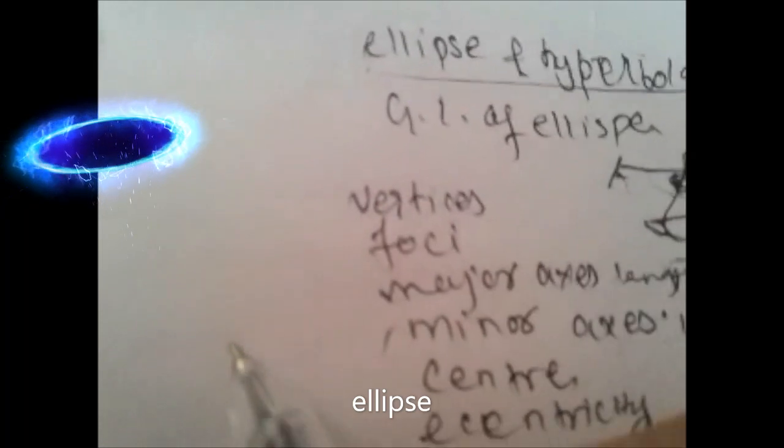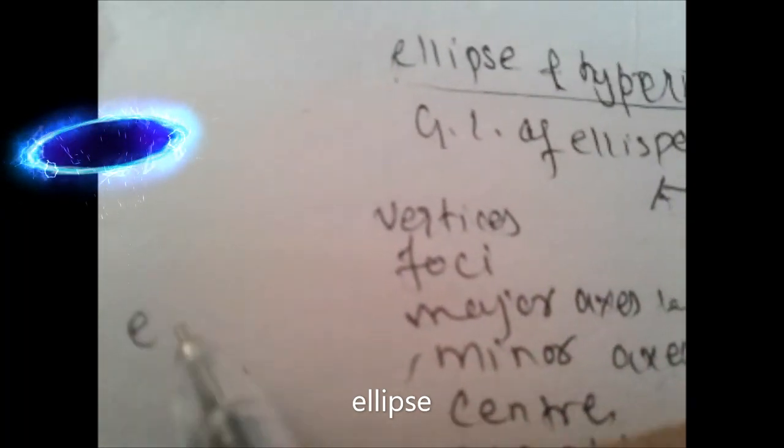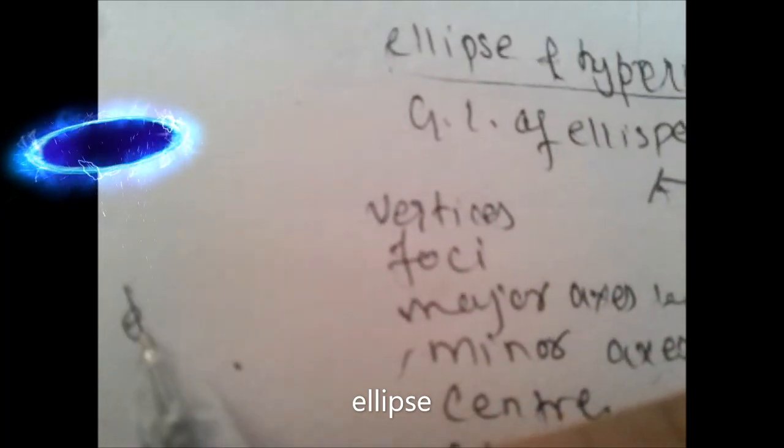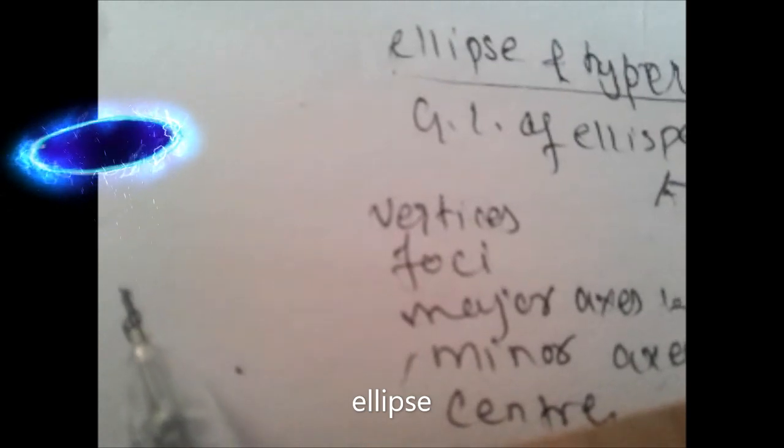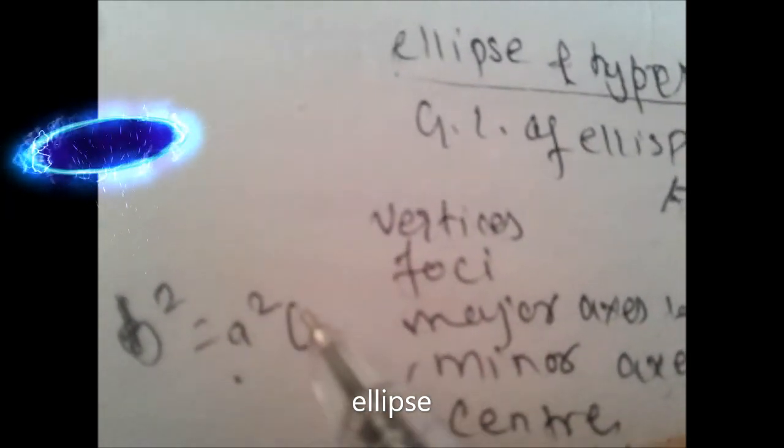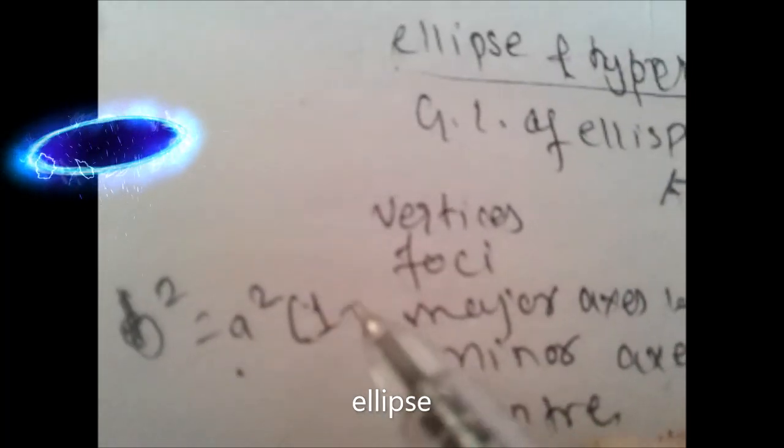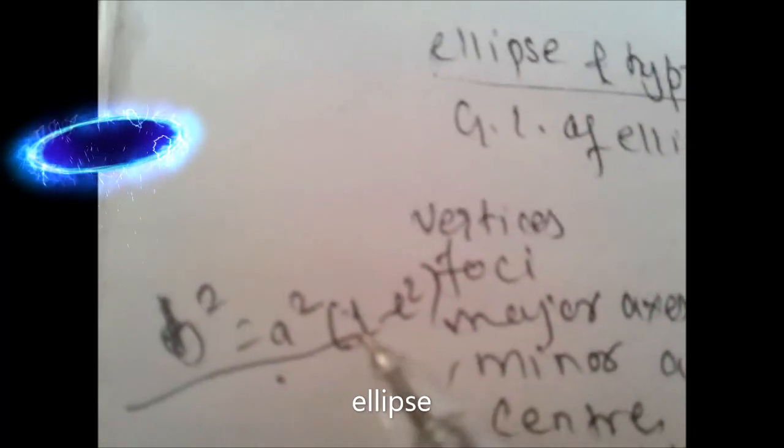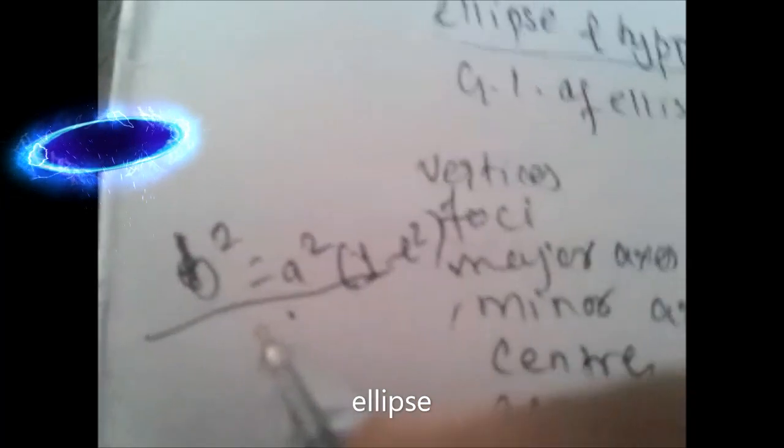We can find eccentricity for ellipse by using the formula: b² = a²(1 - e²). How do we remember this formula? I'll give you a tip.